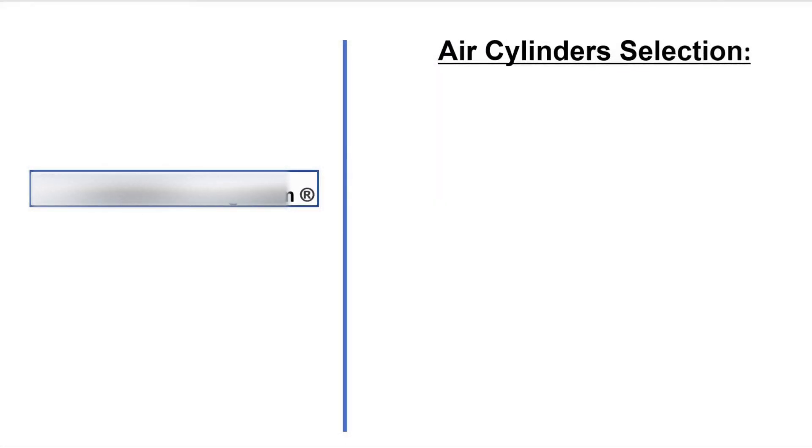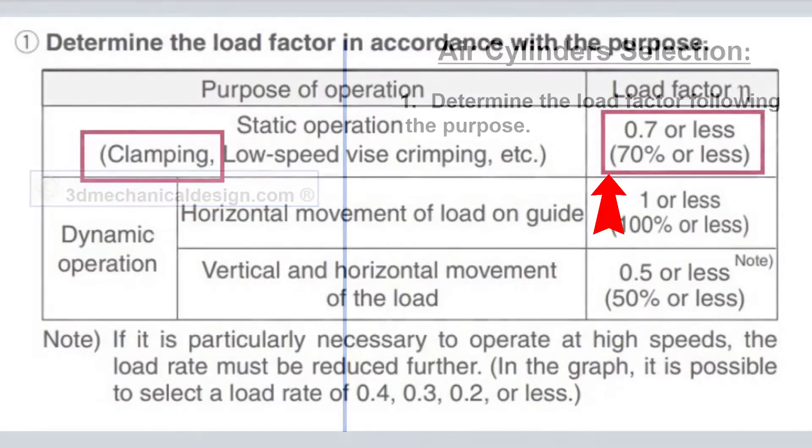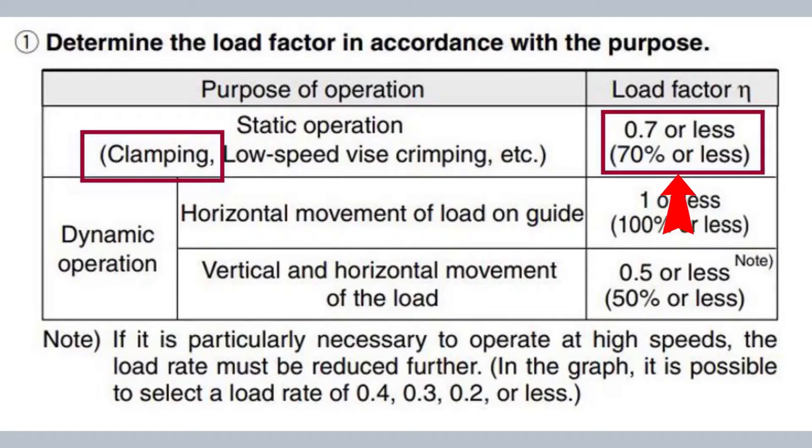Air cylinder selection. First, determine the load factor following the purpose. Static operation clamping, load factor eta equals 0.7 or less.